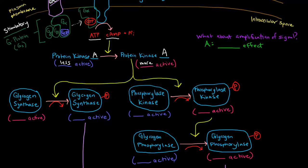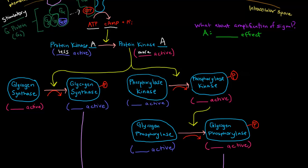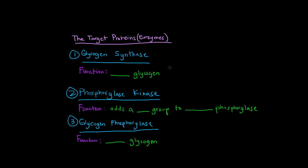The target proteins that protein kinase A acts on are: glycogen synthase, phosphorylase kinase, and glycogen phosphorylase. Glycogen synthase makes glycogen. Phosphorylase kinase is a kinase — it adds a phosphate group to glycogen phosphorylase. And glycogen phosphorylase degrades glycogen. Keep all of these functions in mind when thinking about this cascade.